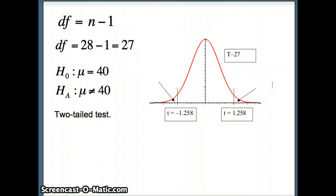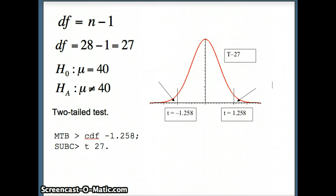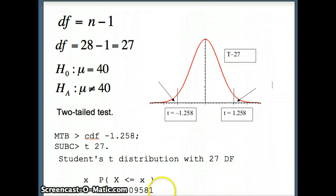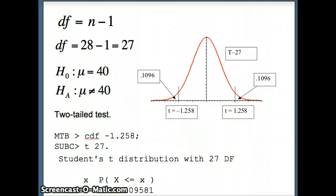We're going to ask Minitab CDF -1.258 T27. That will give us this piece. Due to symmetry, the piece over here will be exactly the same. Minitab tells us that's going to be 0.109581 or 0.1096.